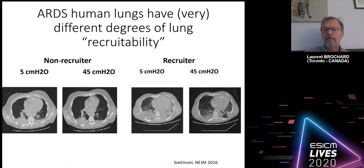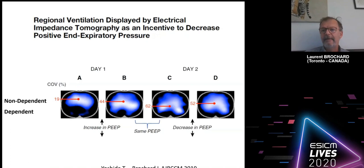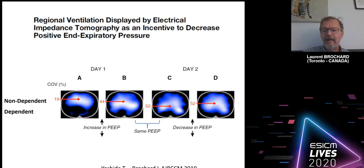The difficulty is that at the bedside you cannot perform this type of CT scan measurement — it's not practical, even risky, and complicated. So we need bedside techniques, and we didn't have them available until very recently. One interesting technique is electrical impedance tomography (EIT).